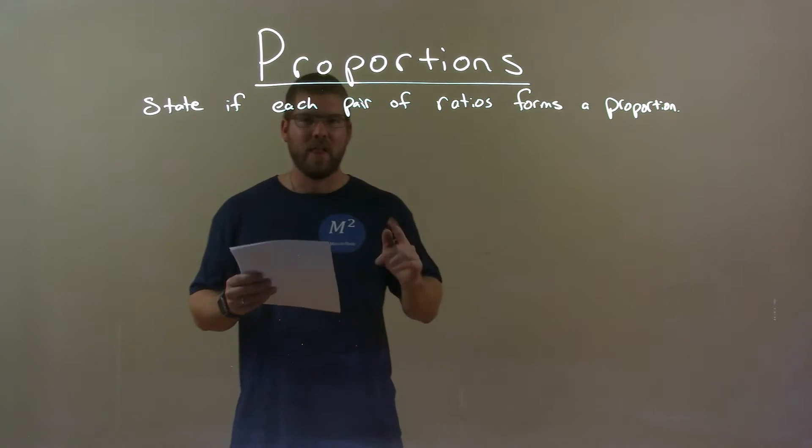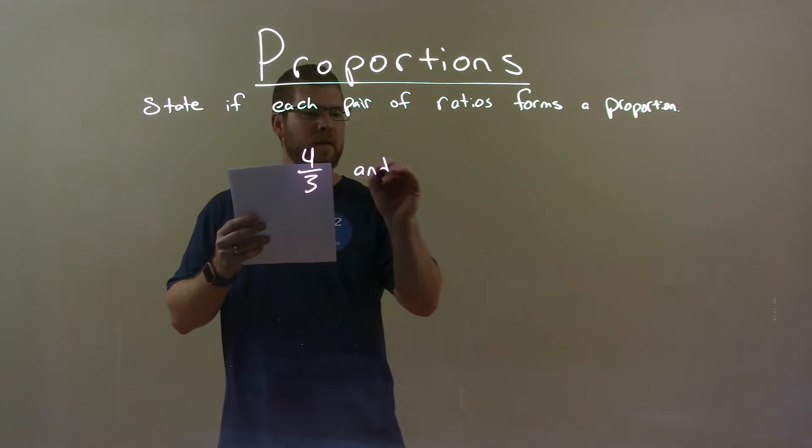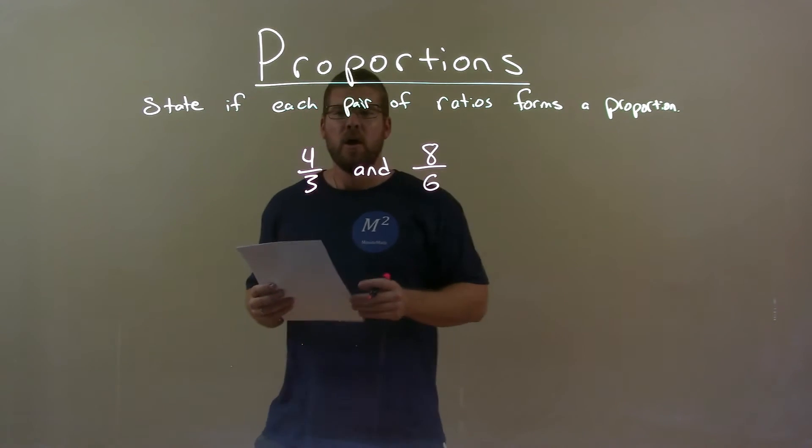So, if I was given these ratios 4 thirds and 8 over 6, okay? Well, first thing, I like to simplify each one of these proportions in the most simplest form, and if they're equal, then form a proportion.